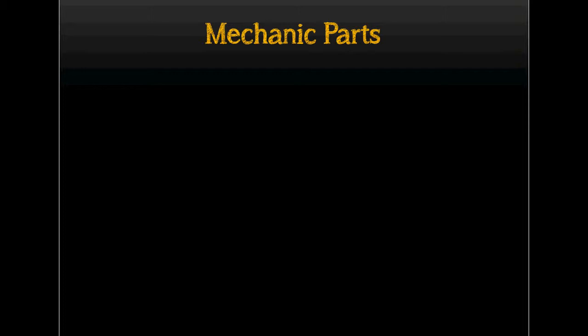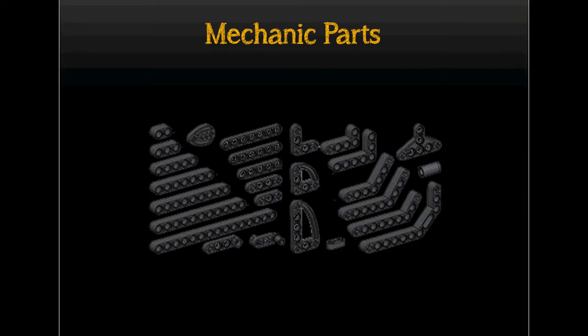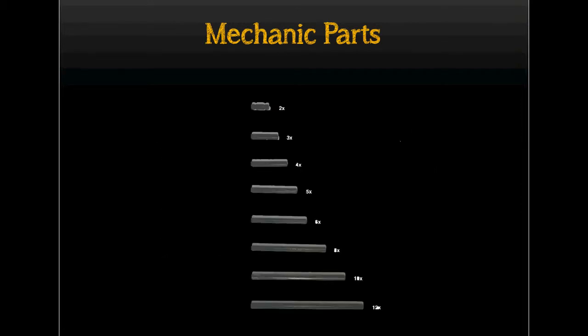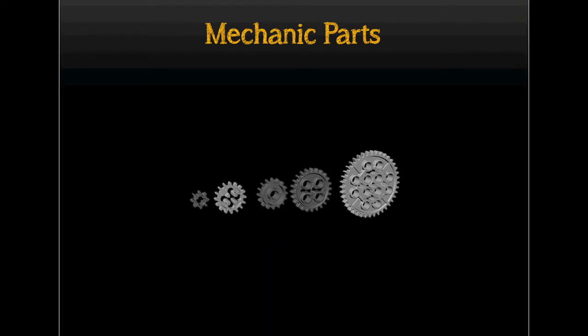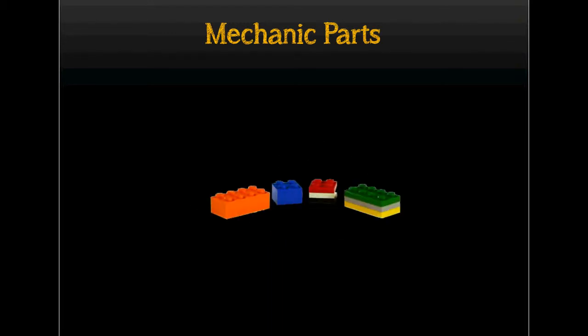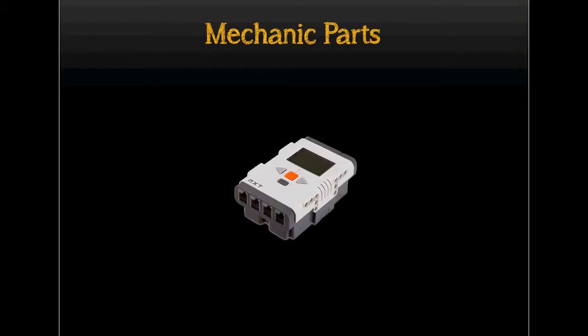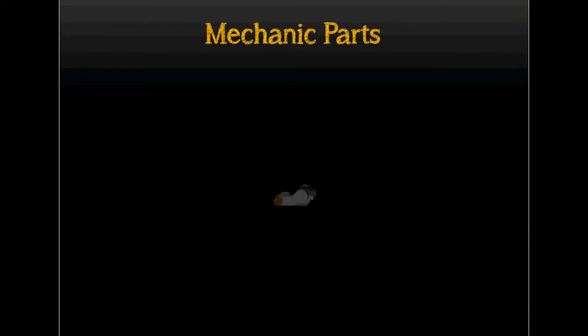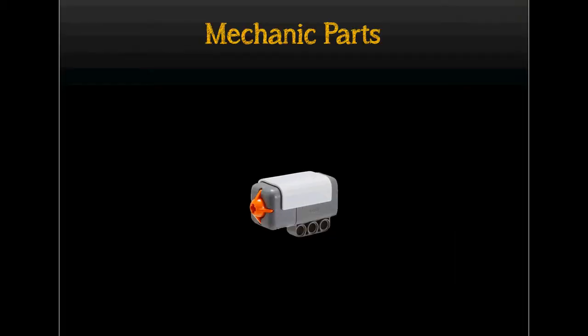First, what we have to do is prepare the Lego components for making a printer robot. The Lego components include NXT beams, axles, racks, bases, gears, pin connectors, and plates. The important elements are the NXT brick as a controller, NXT motor as an actuator, and NXT touch sensor as a switch or indicator if you reach the end of the work area.